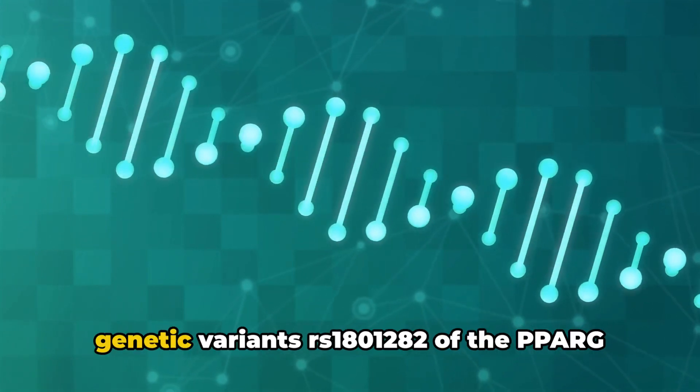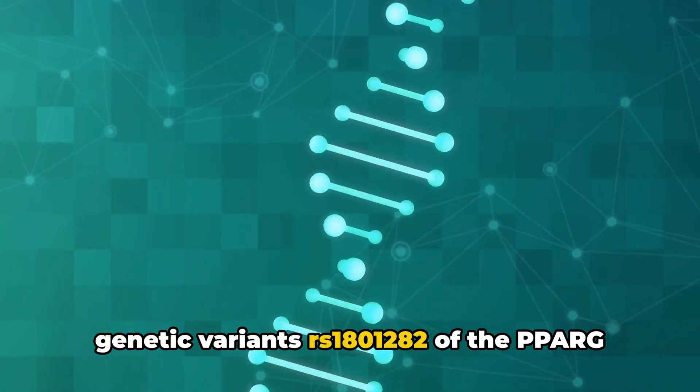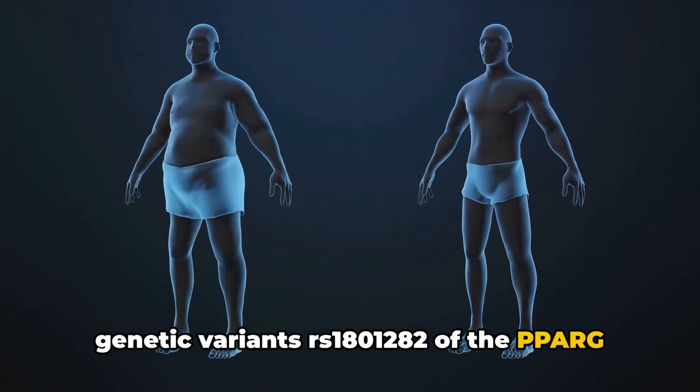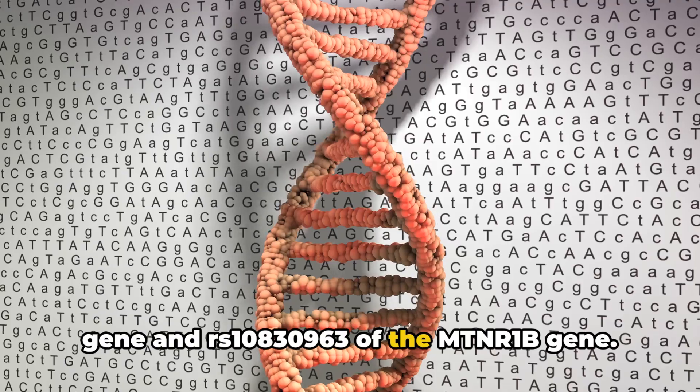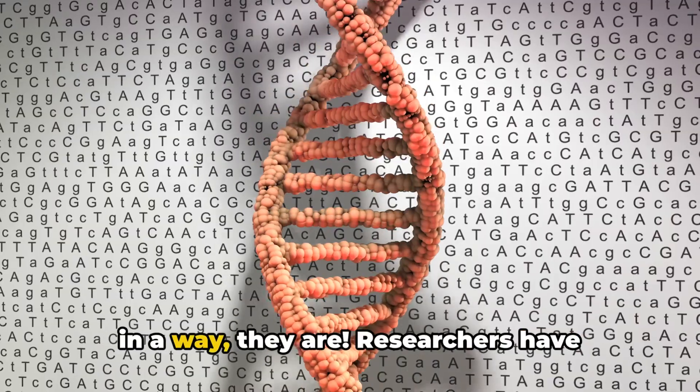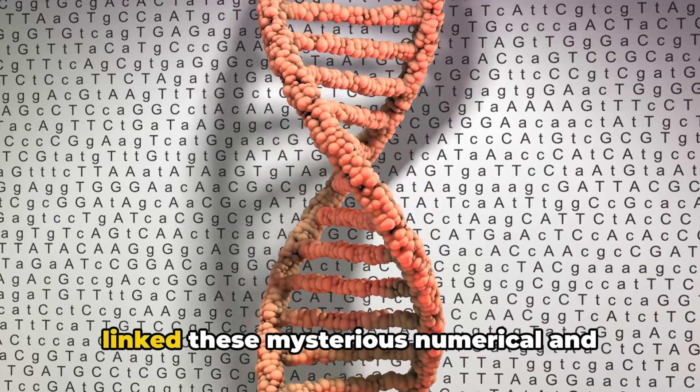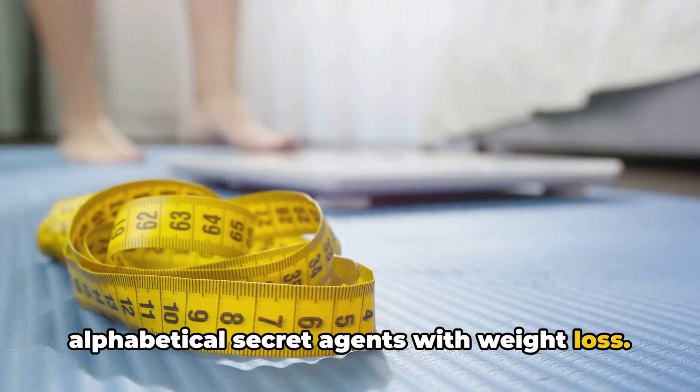For instance, let's talk about the genetic variants RS1801282 of the PPARG gene and RS10830963 of the MTNR1B gene. Sounds like a secret code, right? Well, in a way they are. Researchers have linked these mysterious numerical and alphabetical secret agents with weight loss.